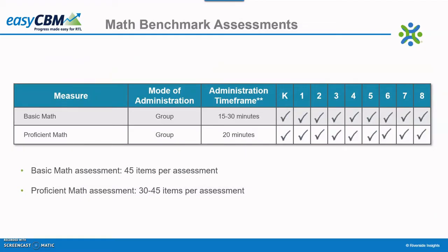For math, EZCBM includes both the basic and proficient math benchmark assessments. Though none of these assessments are timed, schools should allow between 30–45 minutes for administration. Each grade level assessment is group administered and contains three domains, beginning with numbers and operations. The proficient math assessments are more challenging, with a more spiraled approach to assessing math domains — it is the recommended math benchmark assessment for schools. These assessments measure what a student needs to learn in one school year and include specific grade-level standards, as well as some questions one grade level above and below. The number of items on the proficient math assessment ranges from 30 items in kindergarten, to 35 items in grades 1 and 2, 40 items in grades 3 through 5, and 45 items in grades 6 through 8.